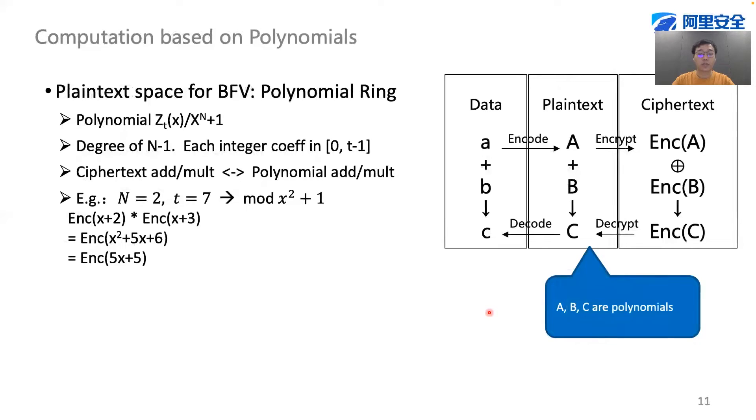In the BFV homomorphic encryption scheme, the plaintext space is a polynomial ring. All polynomials have a degree of at most n-1, and each coefficient is an integer between 0 and t. Therefore, the computation also happens in the polynomial space. This is a very simple example of polynomial multiplication of modulo x squared plus 1. But we have to solve a problem: how to encode the data into a plaintext polynomial?